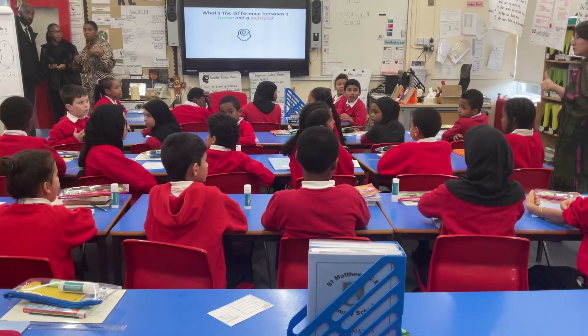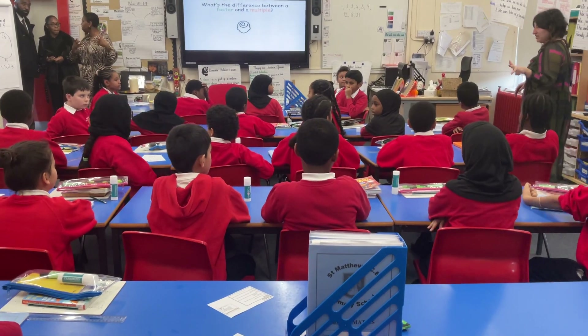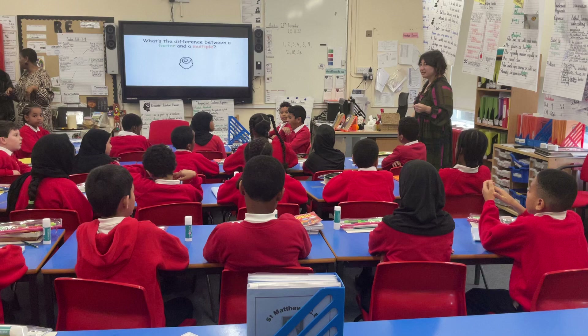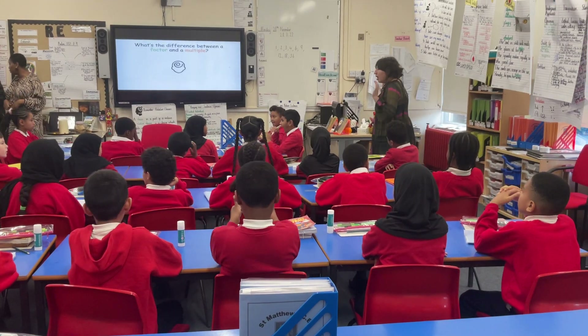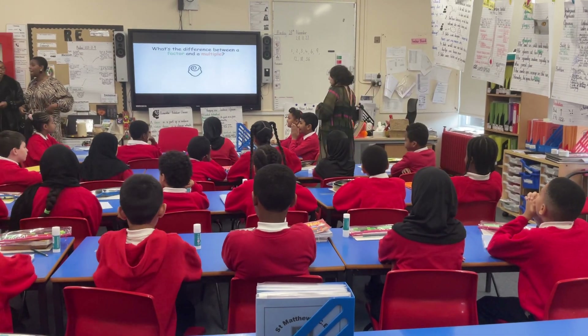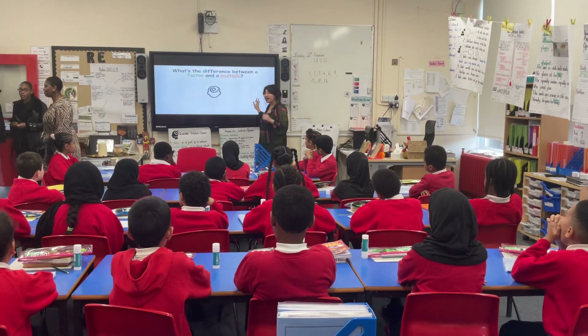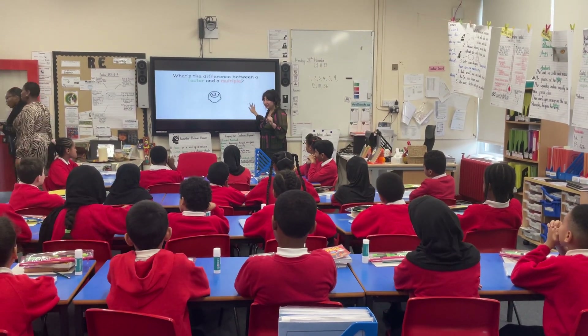A factor of 49 is 1, 7, and 49. Do we agree or do we disagree? Agree! Okay, so if we know the difference between a factor and a multiple now, let's play T.